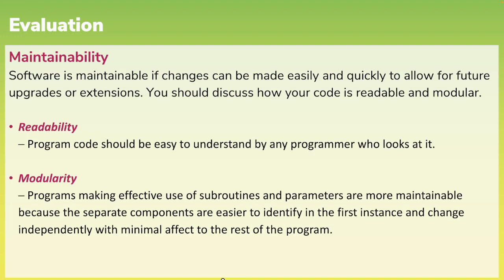Lastly, when we're evaluating software, we're thinking about its maintainability. Software is maintainable if changes can be easily and quickly made. When thinking about maintainability, we consider two things. Readability — this is about the code within our program. Is it easy for programmers to understand? Readability is improved by good use of meaningful variable names, white space, indentation of code and internal commentary. We also want to make sure our program is modular. Programs making effective use of subroutines, subprograms and parameters are more maintainable because the separate components are easier to identify, and they can be changed independently with minimal effect on the rest of the program.